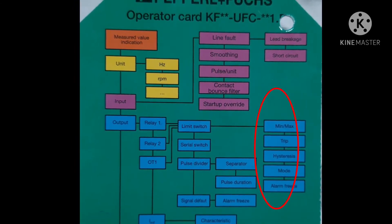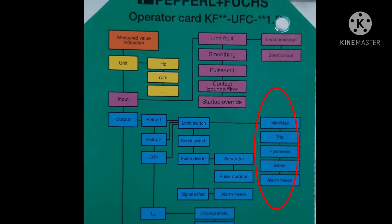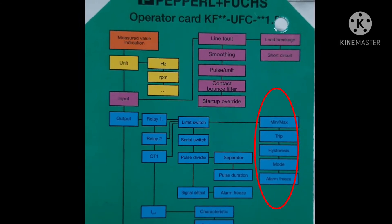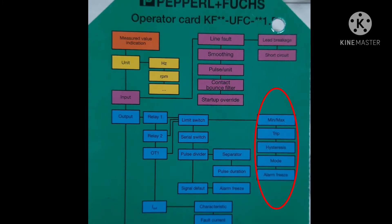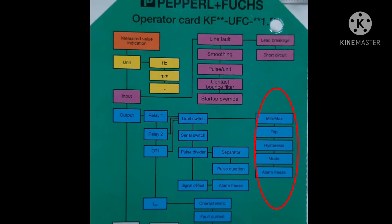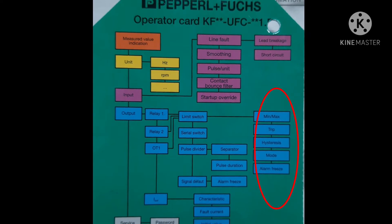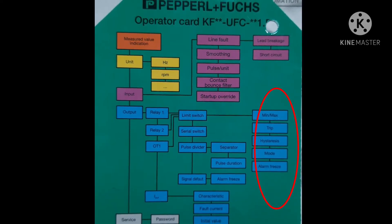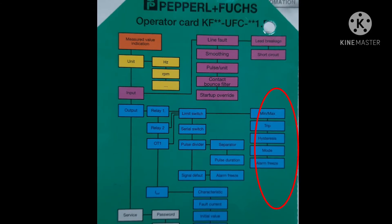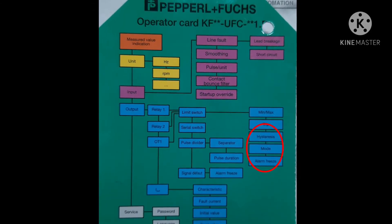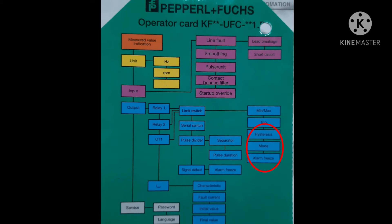For min/max, select 'max' and press OK. Now you can see your window shows 'trip'. Go ahead and write the tripping speed, which will be 125% of your generator speed, then press OK. The window will show 'hysteresis' — go ahead and write 10% of the 125% generator speed value.